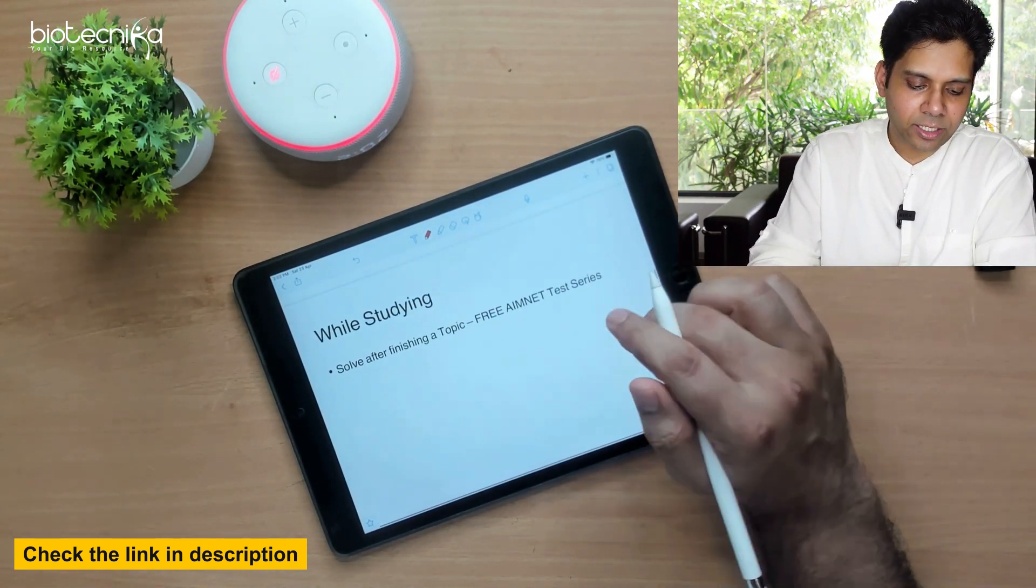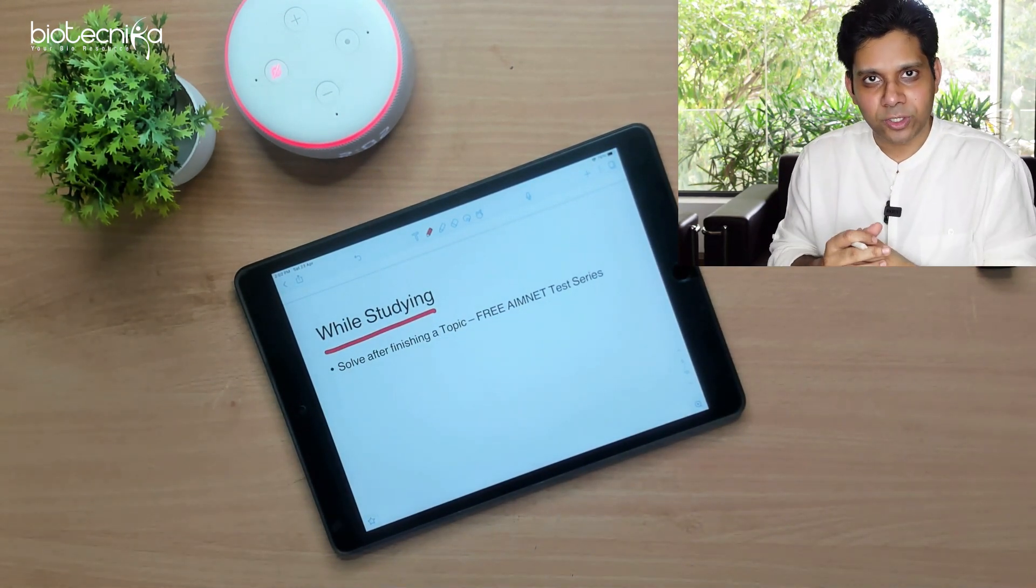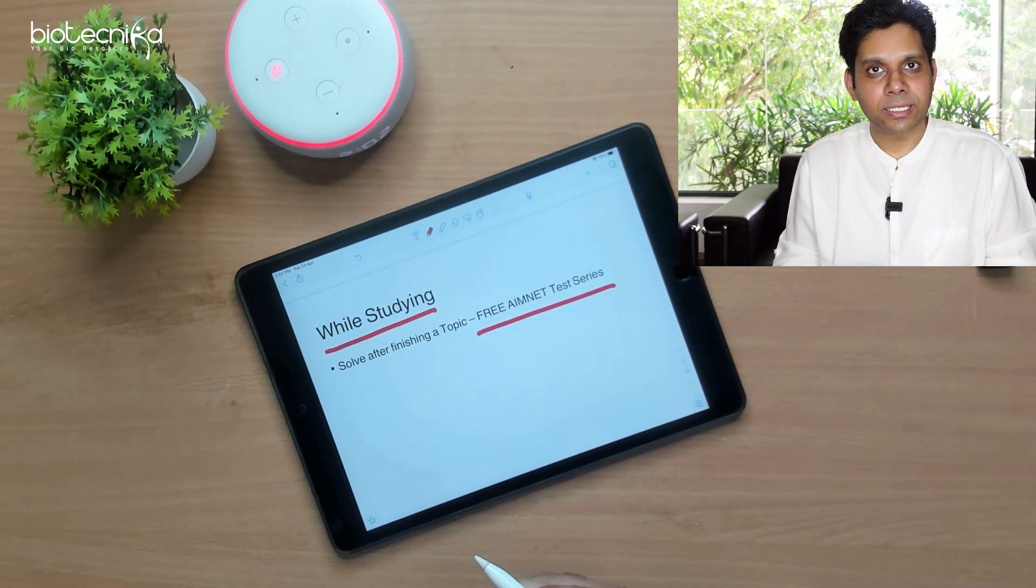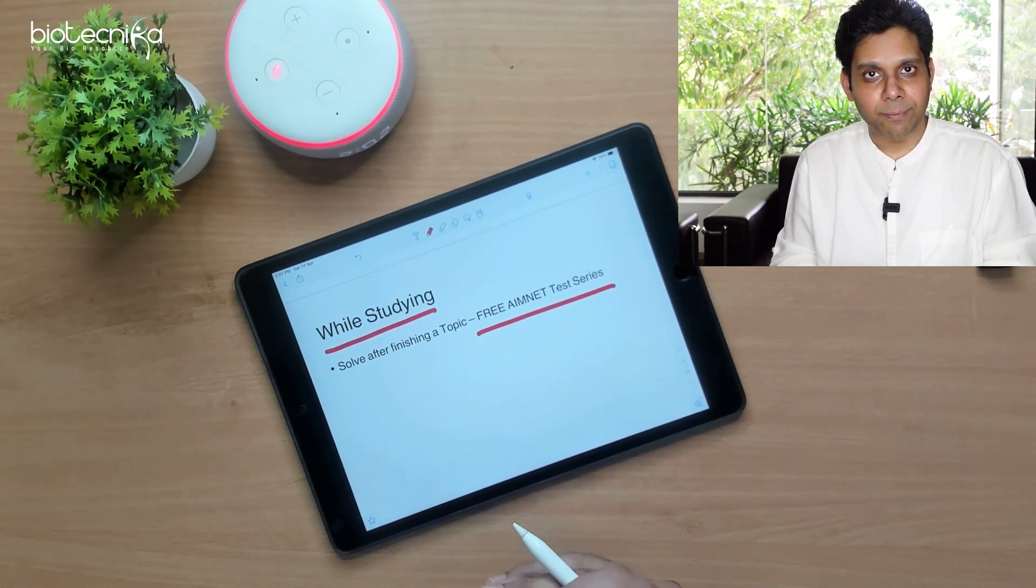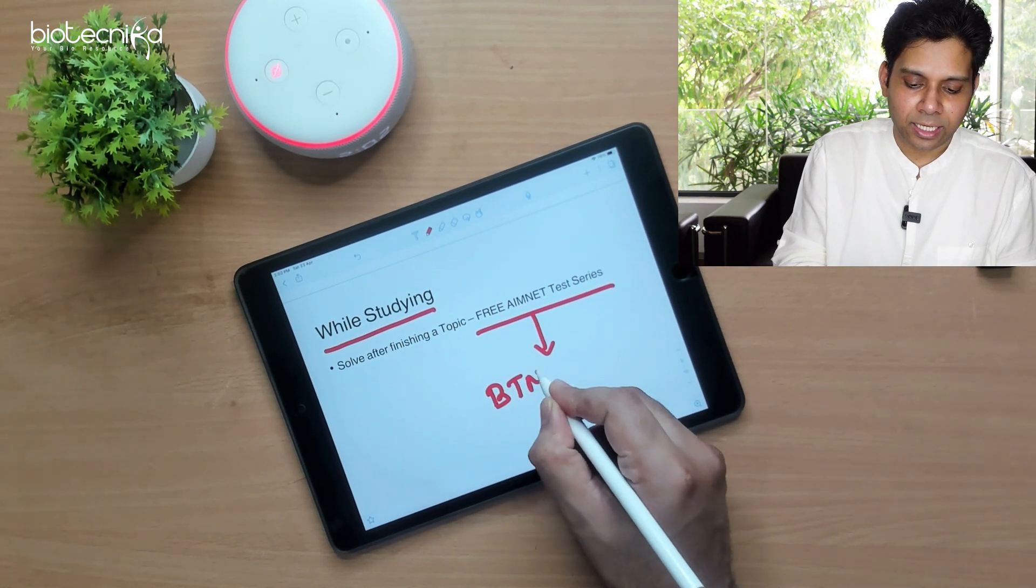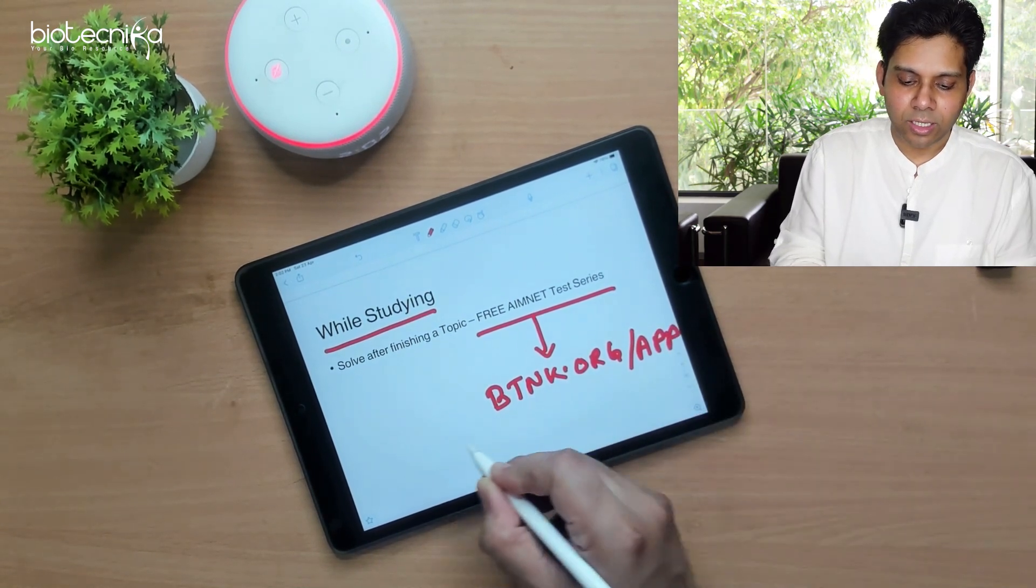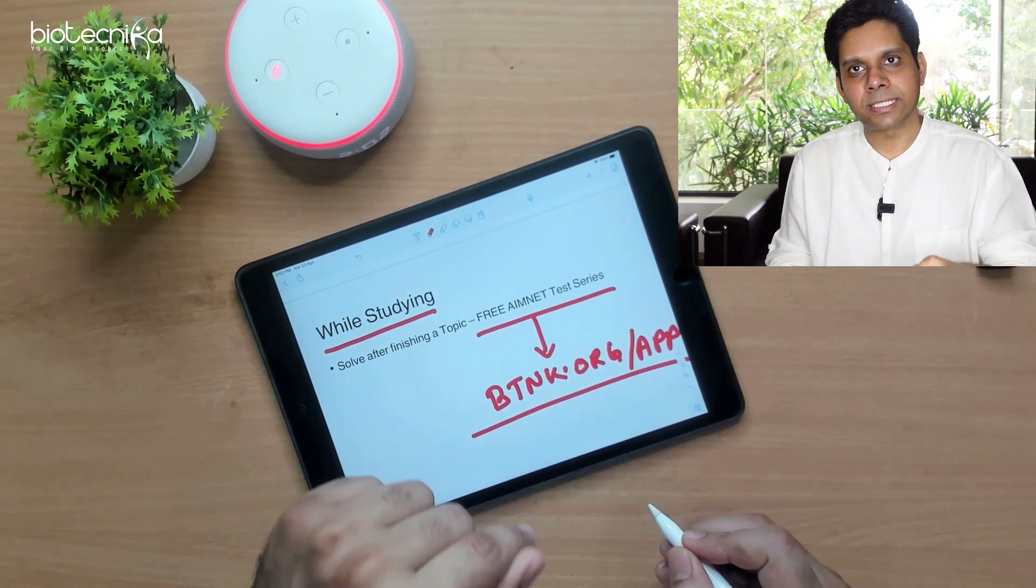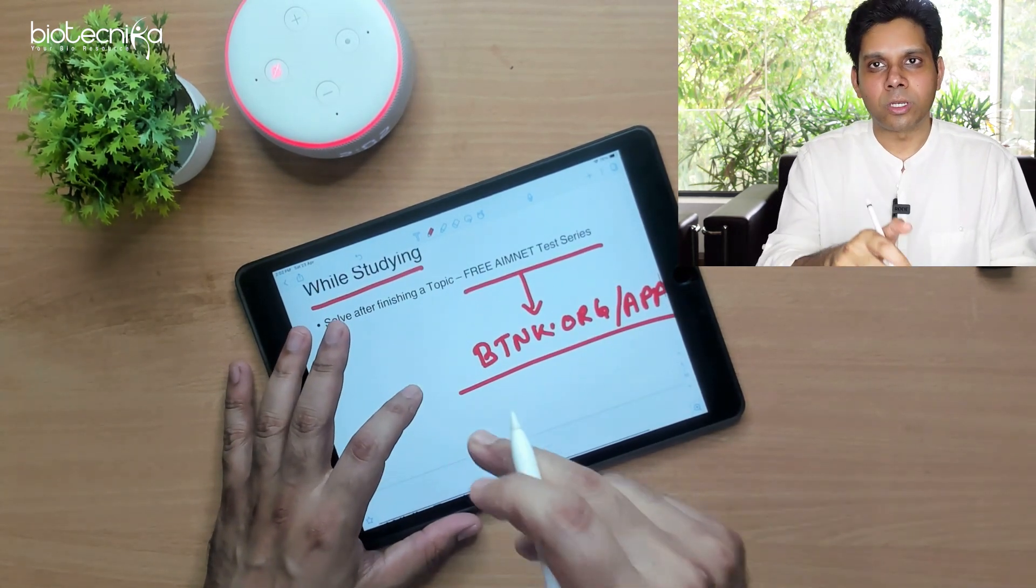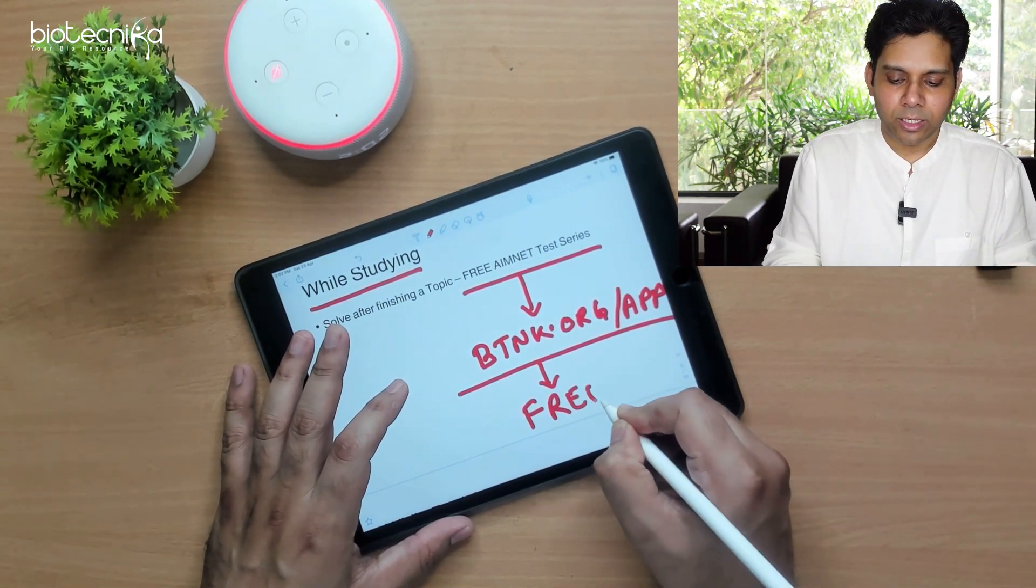Now while studying, what you should do? Our MNET test series is based on previous year question paper. The pattern is similar. So what you can do is you can take up the free MNET test series in Biotechnica app. All you have to do is type btnk.org slash app. The link is given in the description. You will be able to download the app. After downloading, I will mention the coupon code below. Use that to get the MNET test series for free.